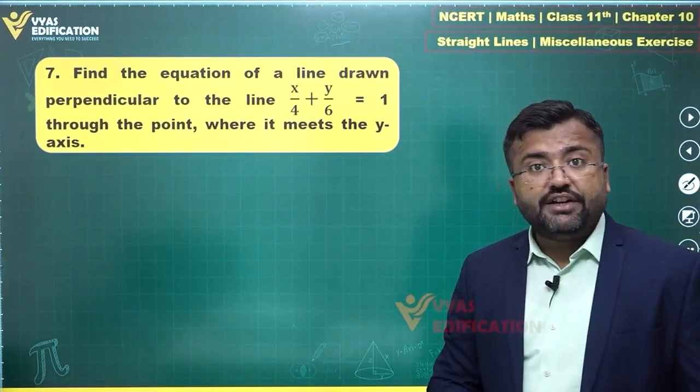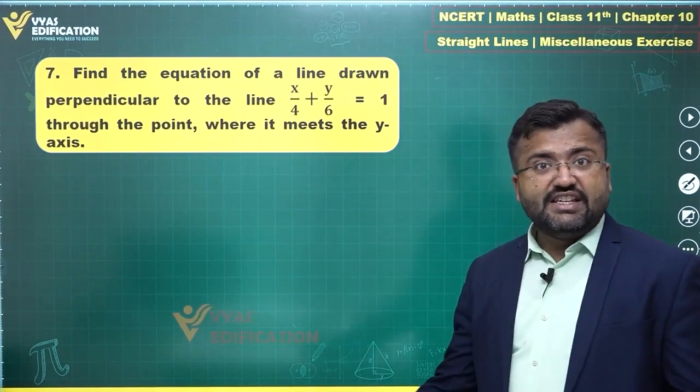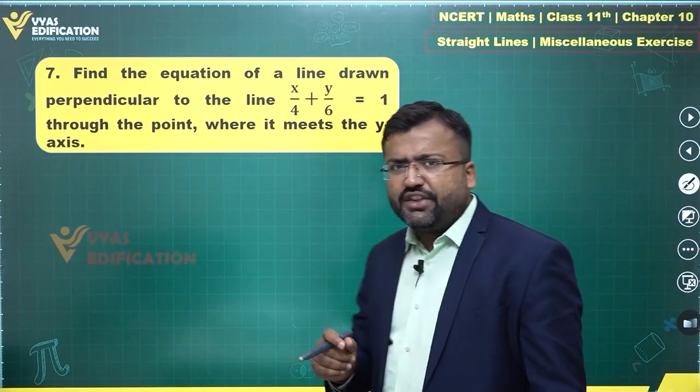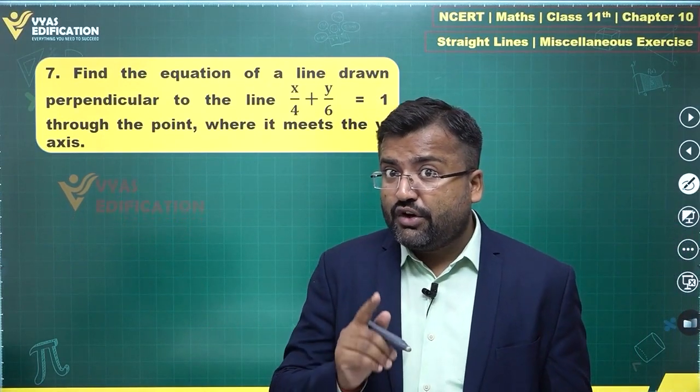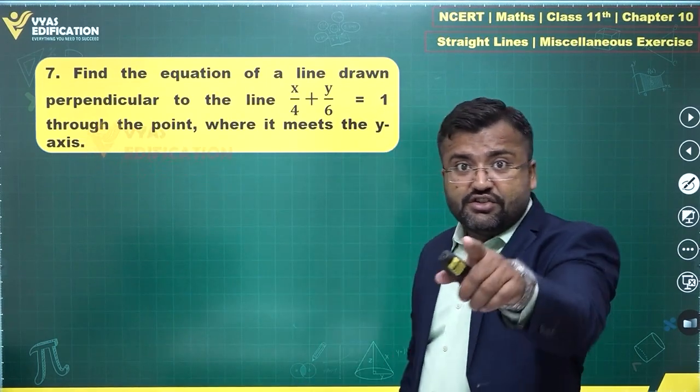This is given in terms of intercept form, and x intercept is 4, y intercept is 6. The x intercept is the point where the line meets the x-axis, y intercept is the point where the line meets the y-axis. That's what the question is talking about.